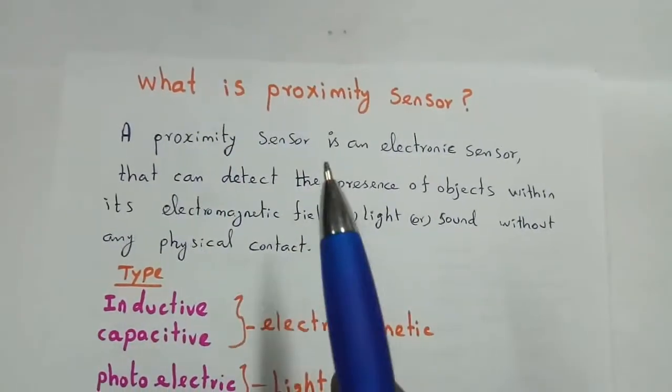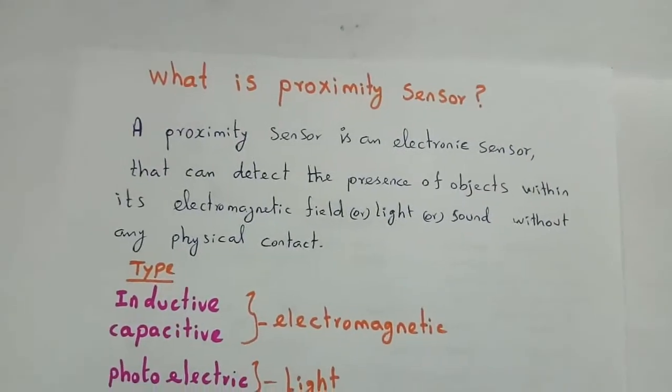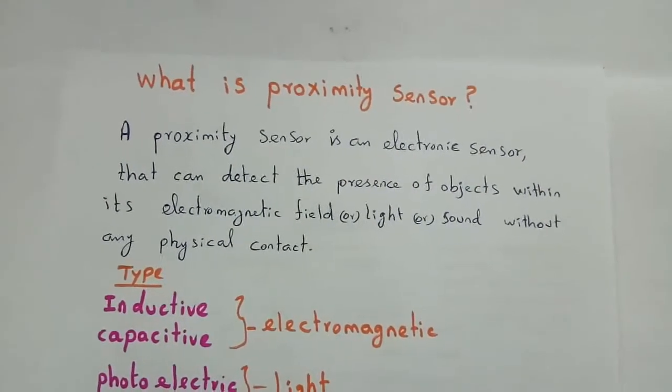Proximity Sensor means what is it? Whatever object is, it can be sensed in the magnetic field, light, sound. Without physical contact, it can be sensed.